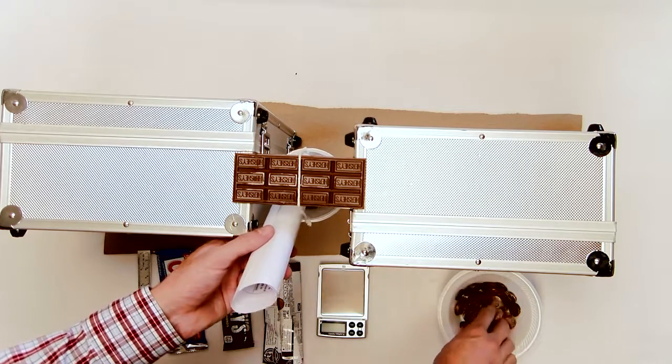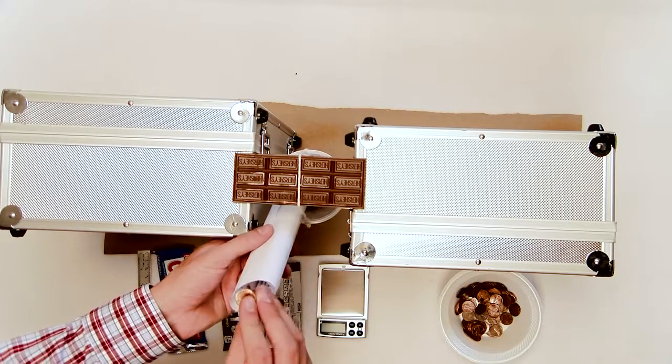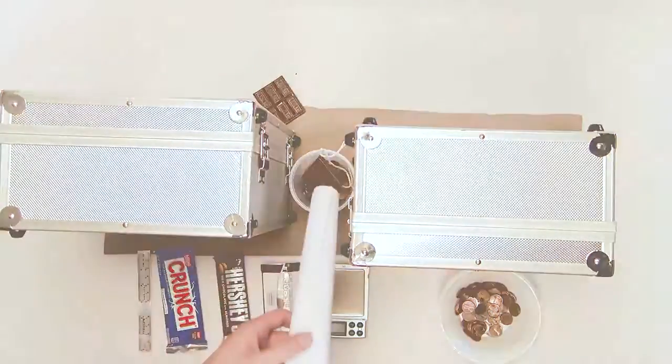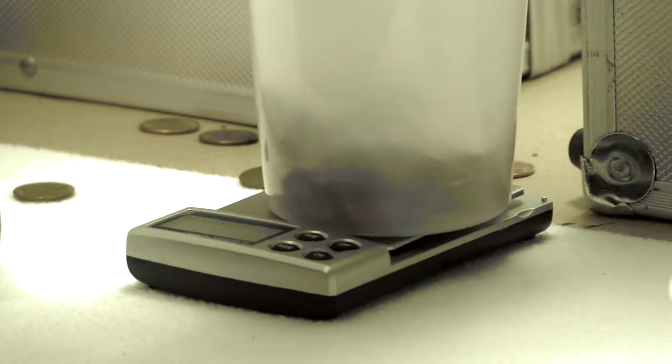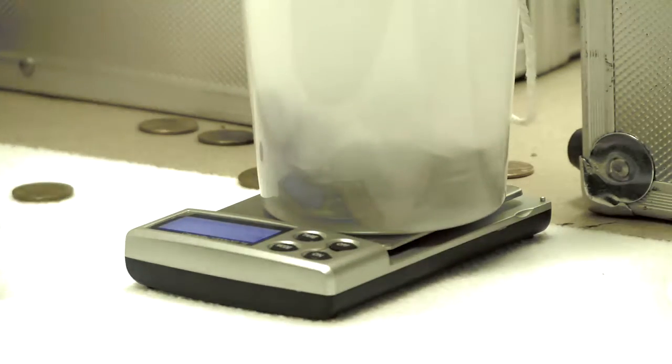Continue placing pennies into the cup until the chocolate bar fractures. Be sure to note any deflections or bending of the chocolate bar during the loading process. Record the number of pennies in the cup at the time of fracture. Look at the fracture surface and record any observations.